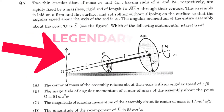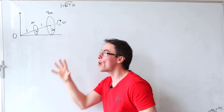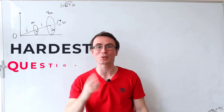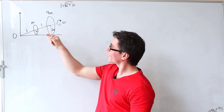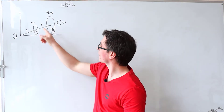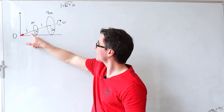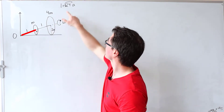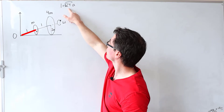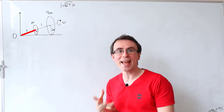Let's solve a legendary JEE Advanced question — known as one of the hardest questions to ever appear. We have two circular disks of mass m and 4m. This length l is given by √24 times the radius a.